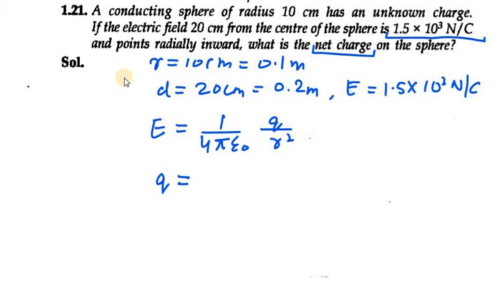We need to rearrange this equation to solve for q, so it becomes q = 4πε₀r²E. We know that 1/(4πε₀) equals 9 × 10⁹, so its reciprocal will be used.